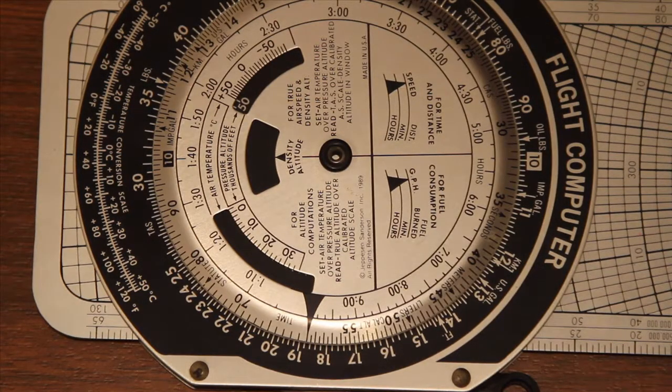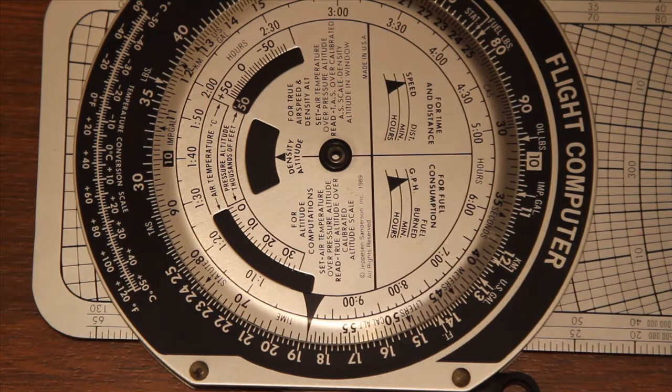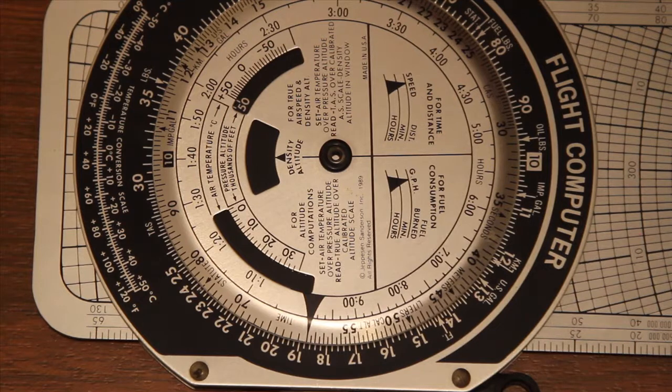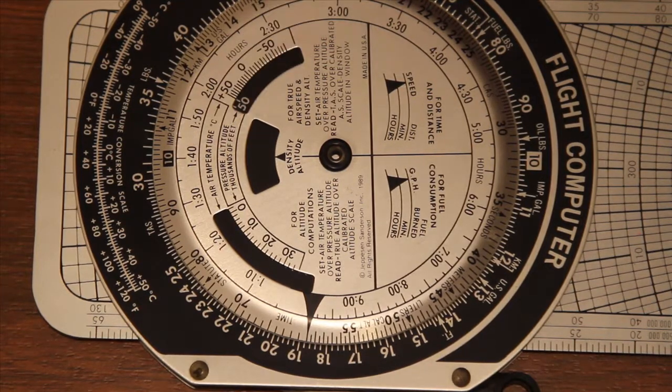And so division is just as easy. What you do is put the top number of your division on the outer scale and put the lower number of your division on the inner scale, and then you read the answer off at the number 10 on the inner scale.